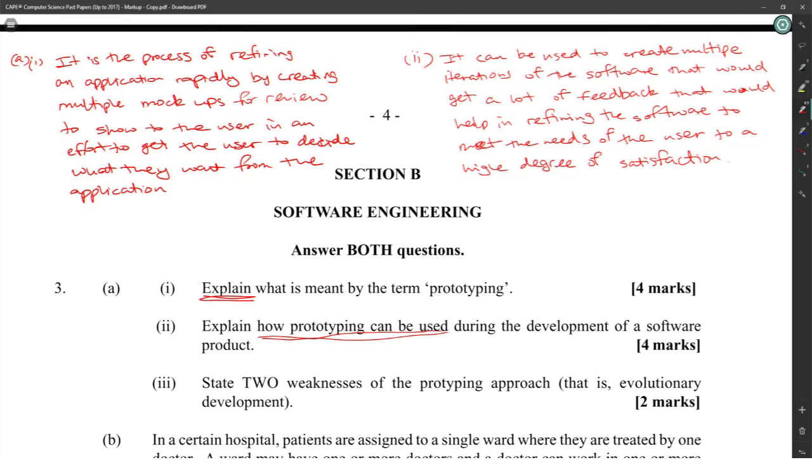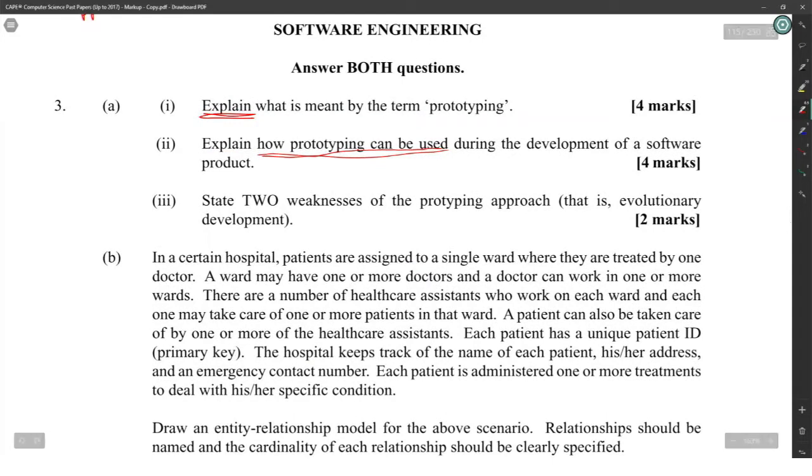State two weaknesses of the prototyping approach, that is evolutionary development. One: it can take very long because there is no set end product. And two: resources can be wasted if clients reject the mock-ups. All right.